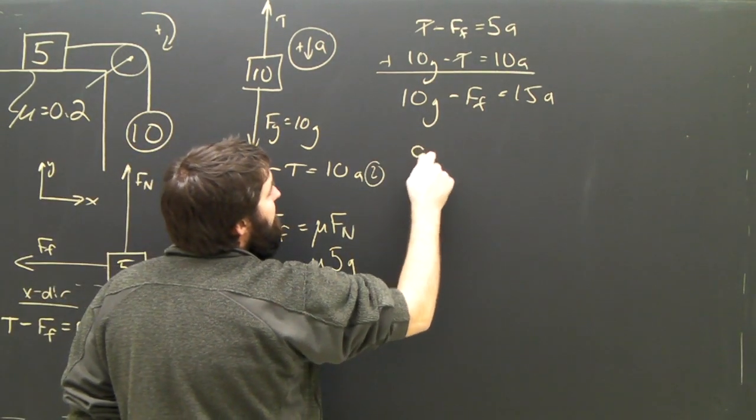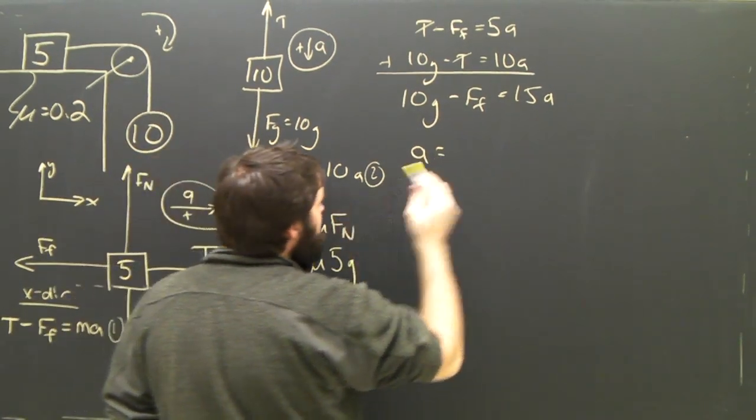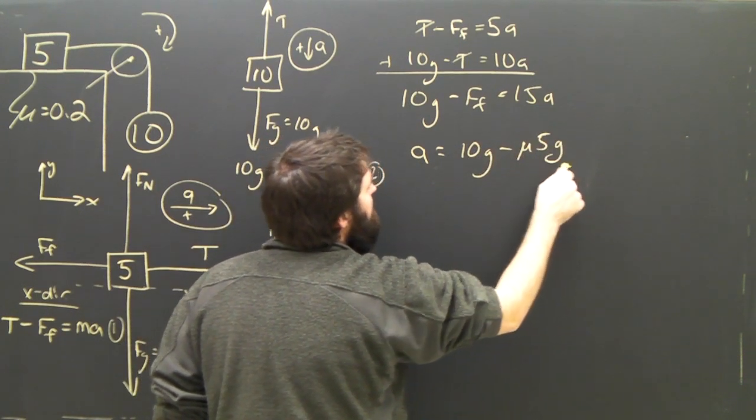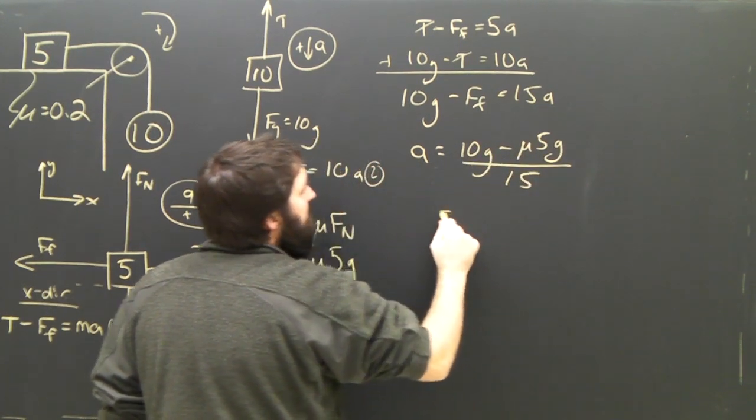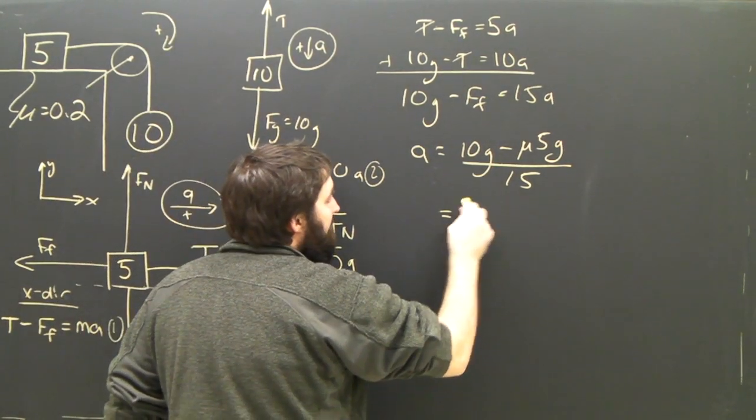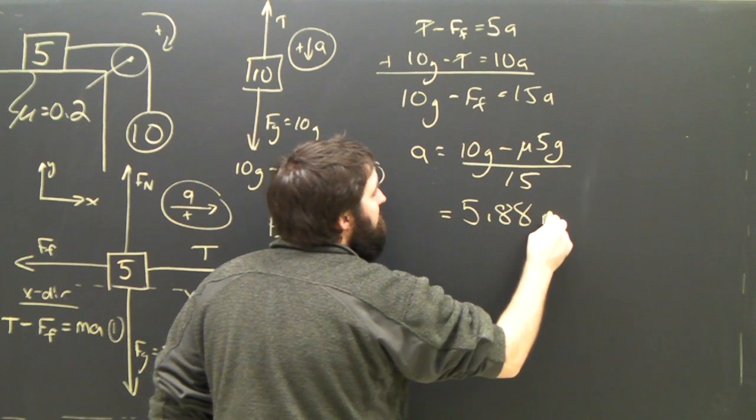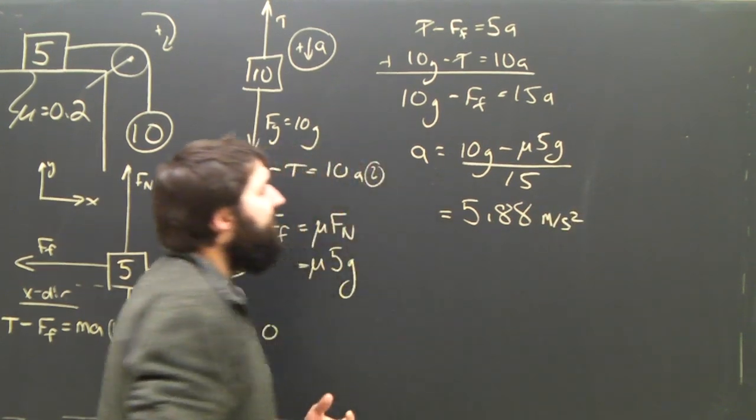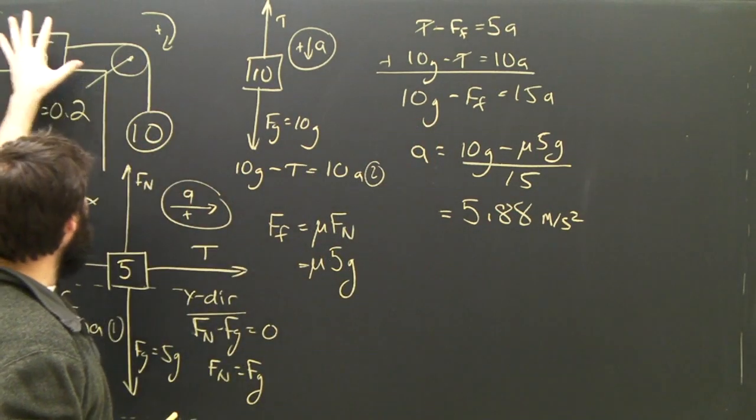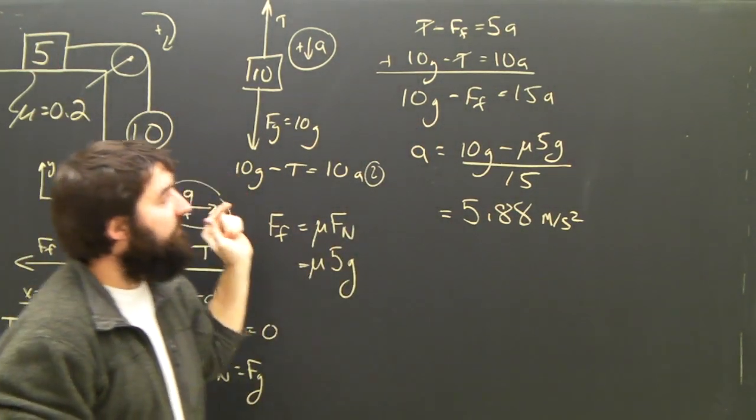Dumping it back into here and rearranging, I get a equals 10g minus mu times 5g all over 15. And if I dump everything in and I do my math properly, I get 5.88 meters per second squared. Again, the 10kg object will accelerate at this rate down. The 5kg object will accelerate at this rate to the right.